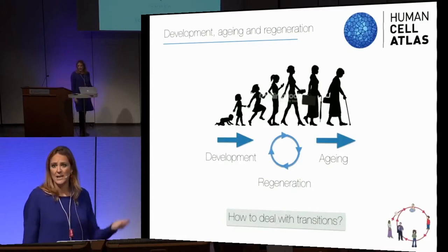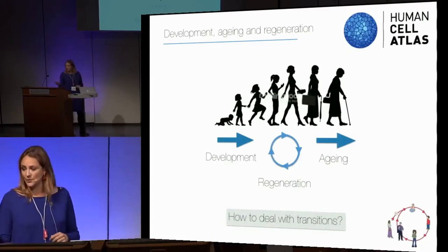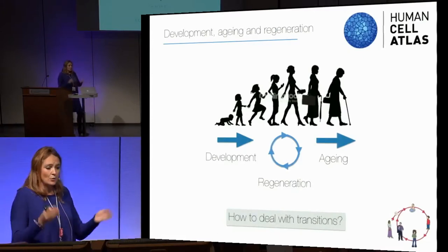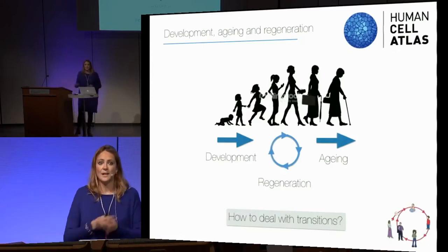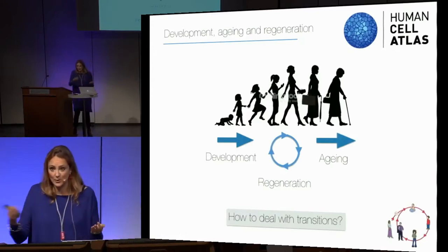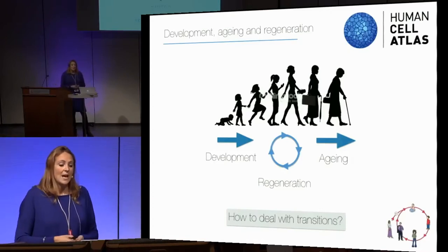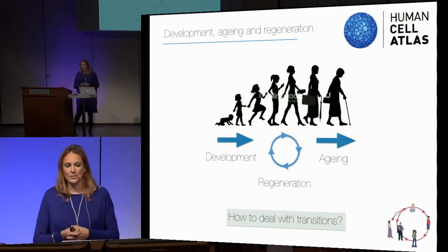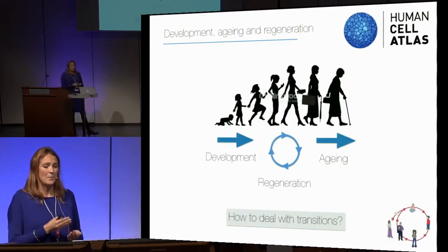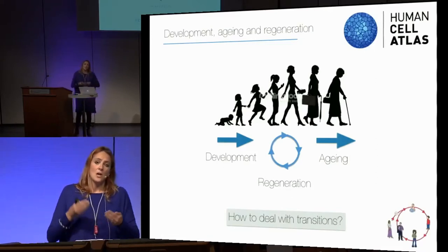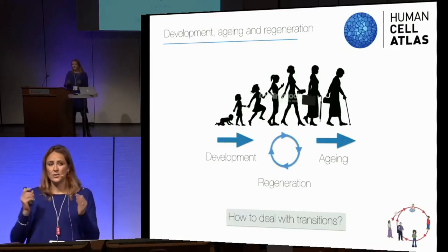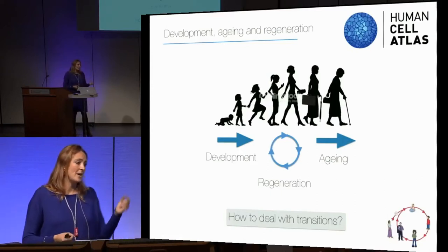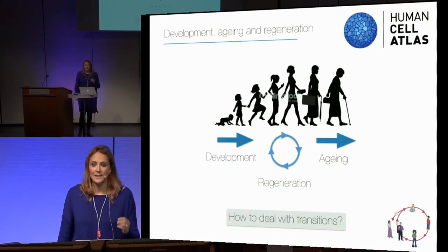How can we combine all this? These are really transition states that are very important. As we saw in the previous talk on lineages, we don't jump from one state to another — it's a continuum where we slowly develop and age and regenerate. How can we deal with this transition? Something I'll come back to later is that these transitions might be very fast, so we need to sample enough cells to capture them at the molecular level.